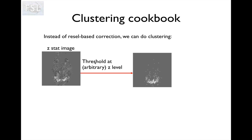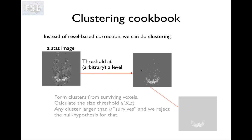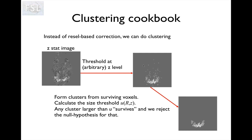Then we threshold that at some arbitrary set level — arbitrary within reason, i.e. it has to be over a certain level, somewhere around two and a half or three. So we threshold at an arbitrary level, then we get all the surviving voxels and turn these into clusters, finding the connected clusters of voxels that are all above this threshold.